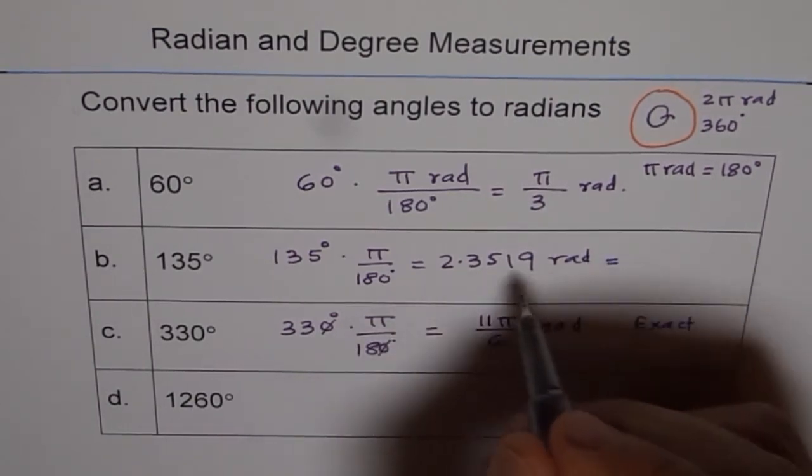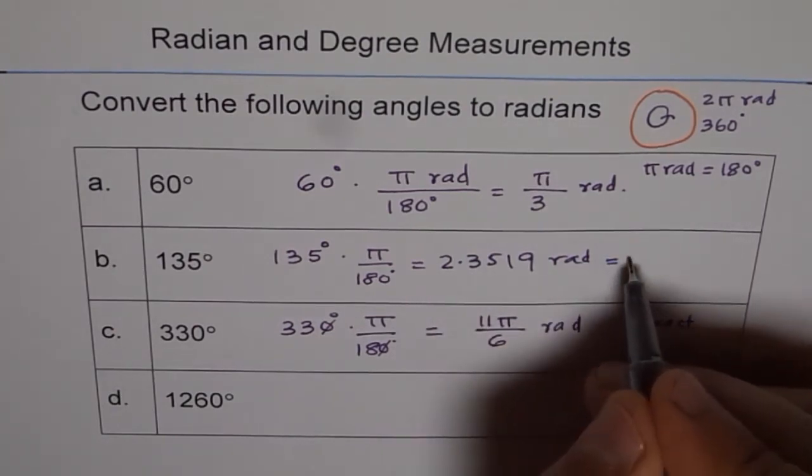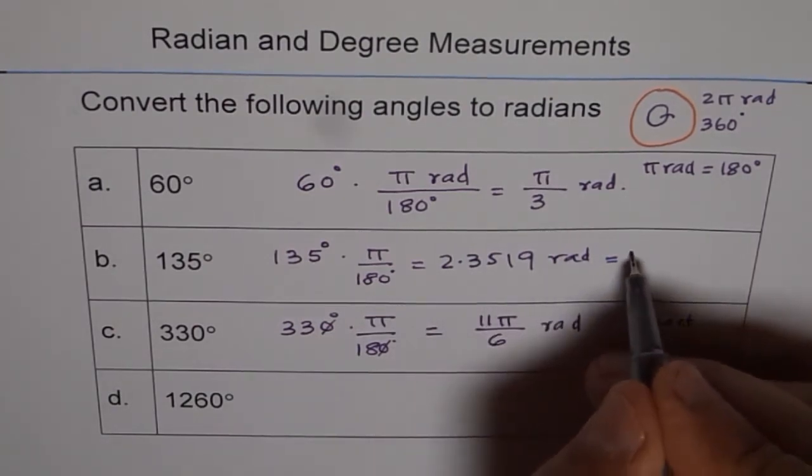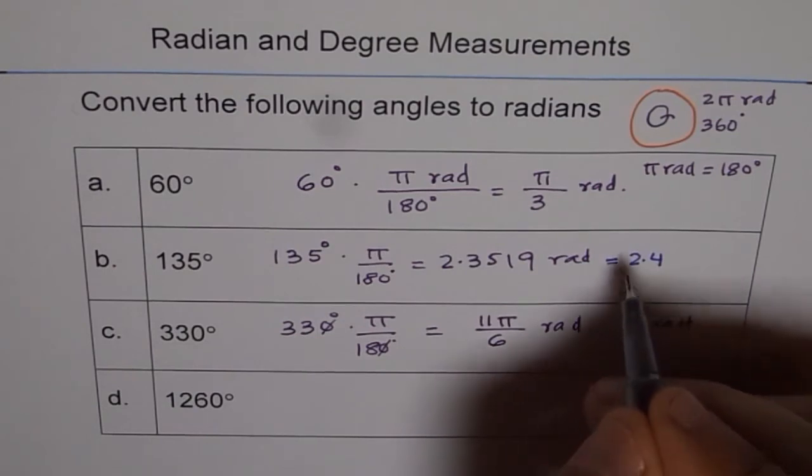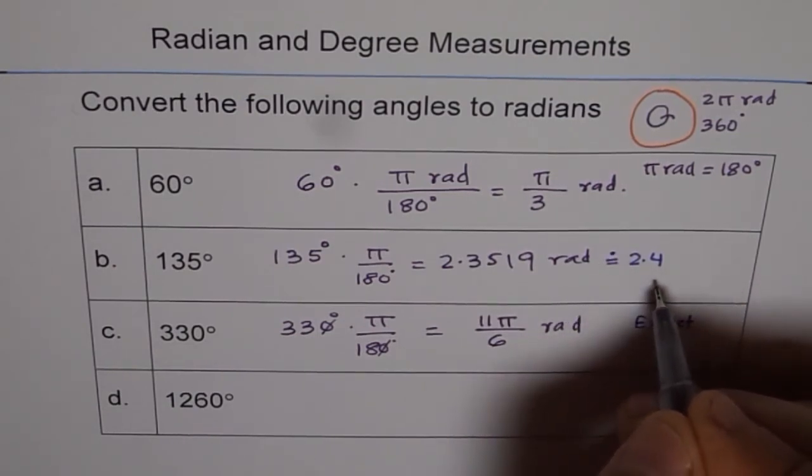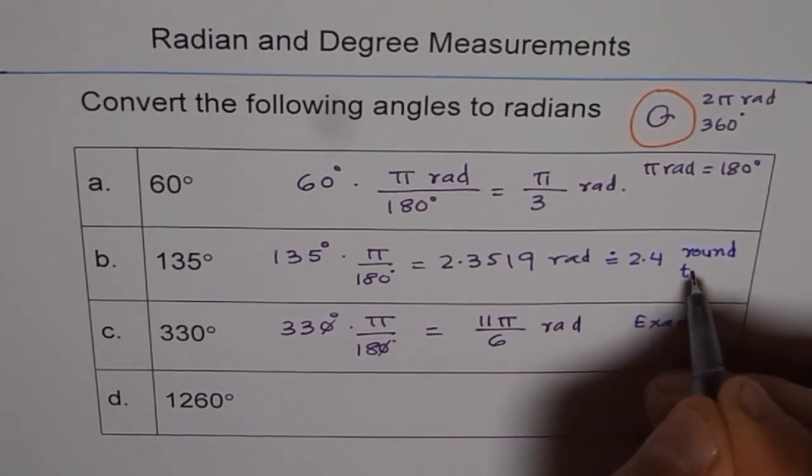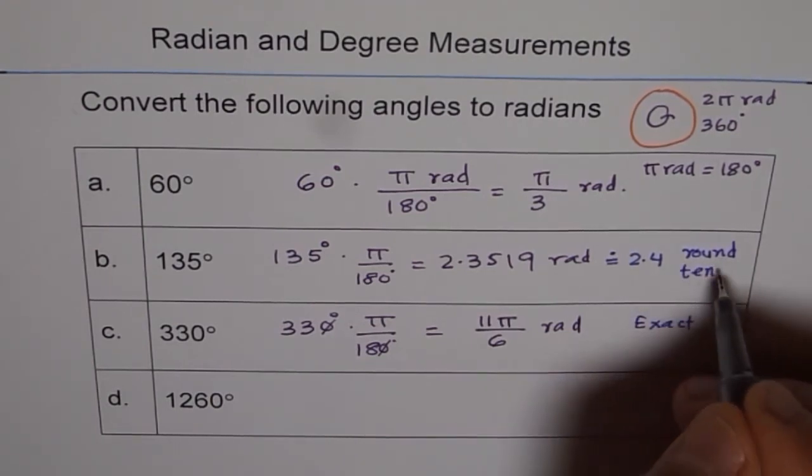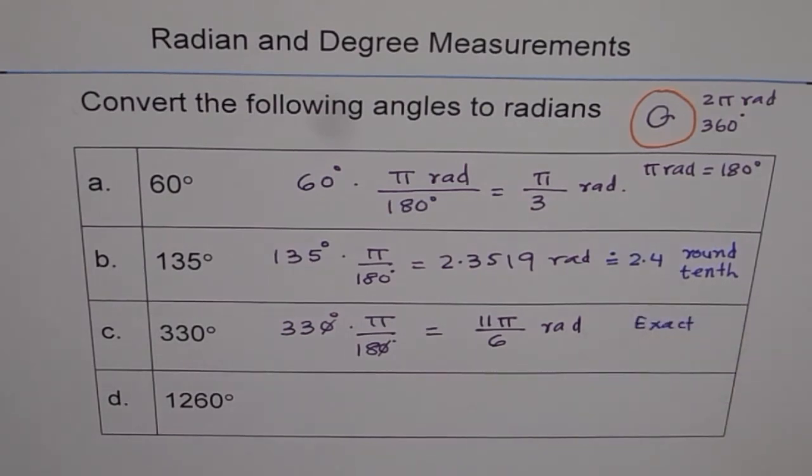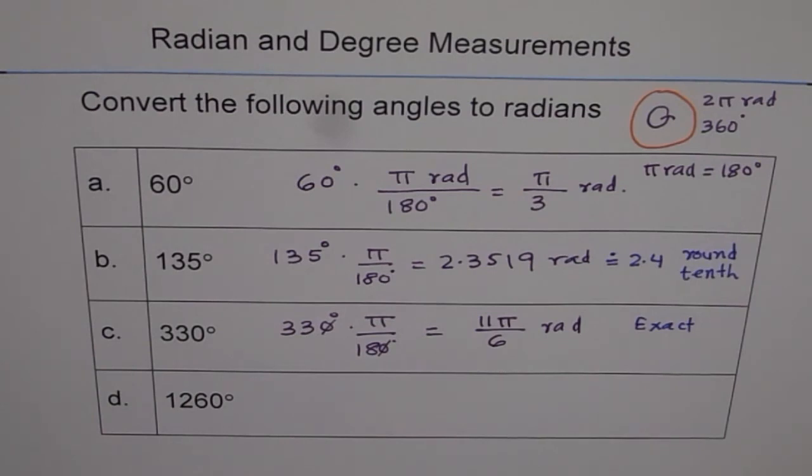And here I can actually round it to 2 decimal places. So I can write this as 2.4 when rounded to 2 decimal places. So this is round. I rounded to tenth this time. So I will write rounded to tenth. One decimal place.